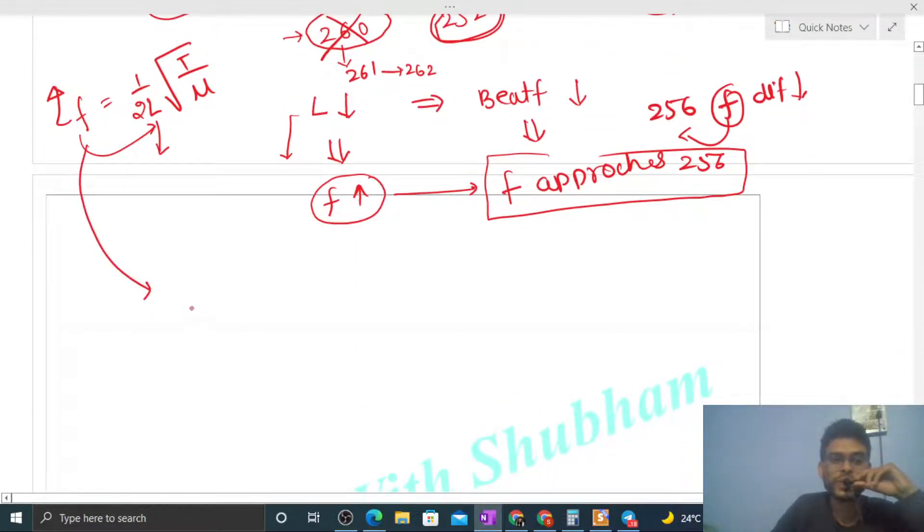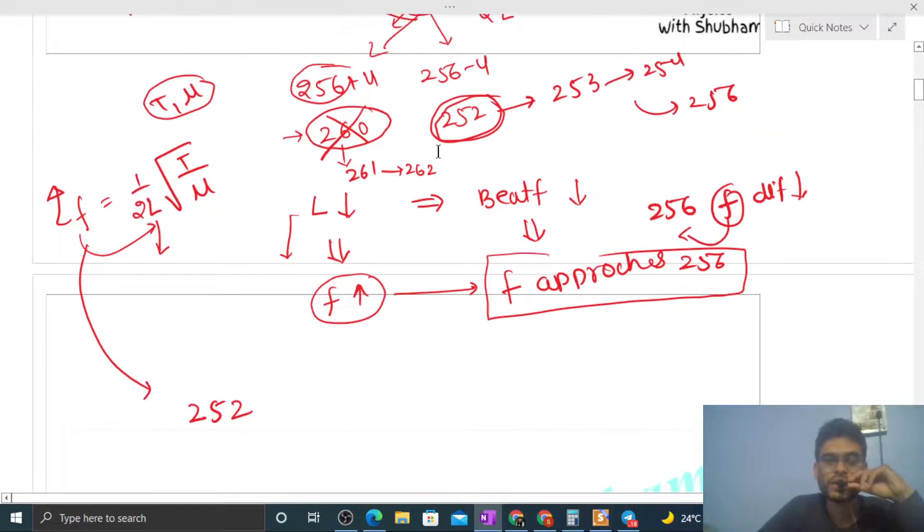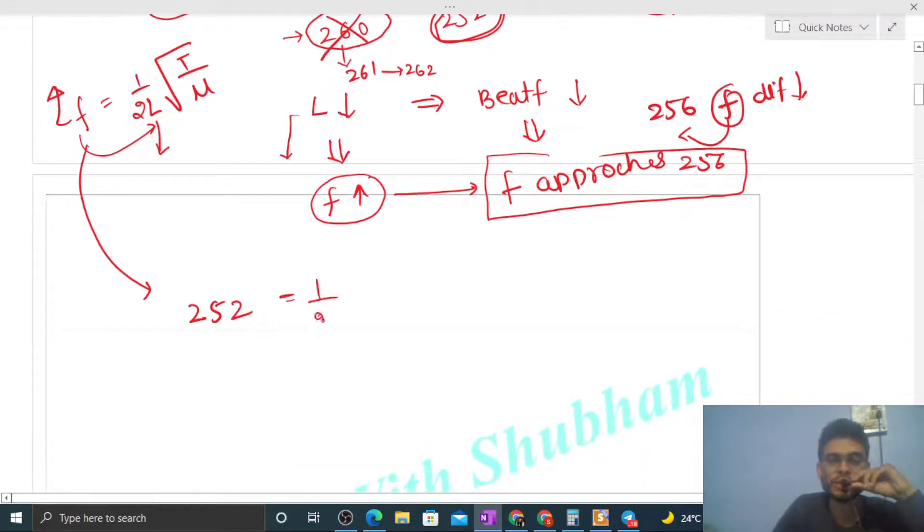Now 252, if you increase it - 253, 254 - it is approaching 256, right? So the answer will be 252. It means the value of f is 252.